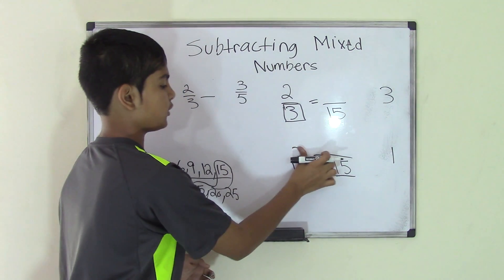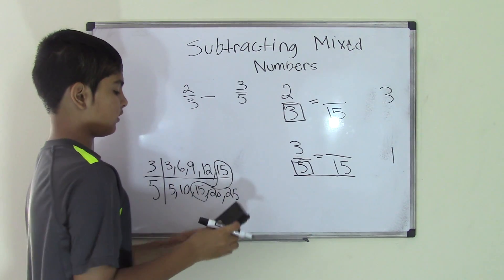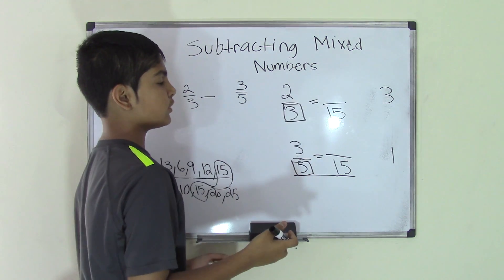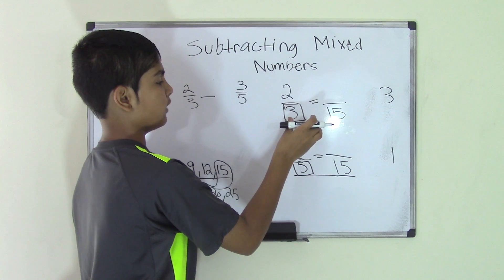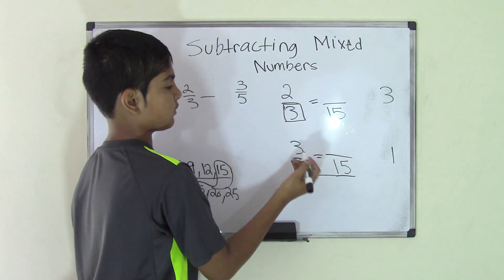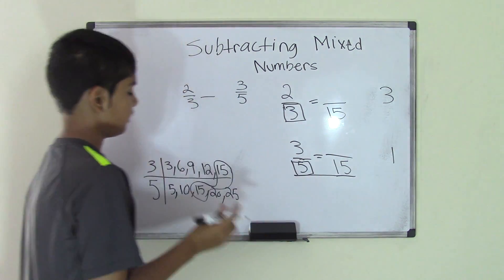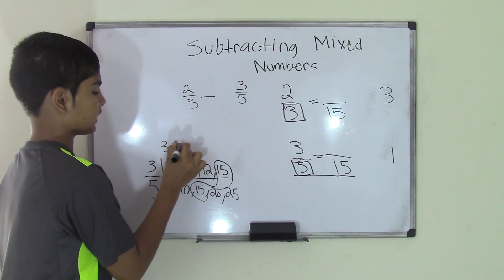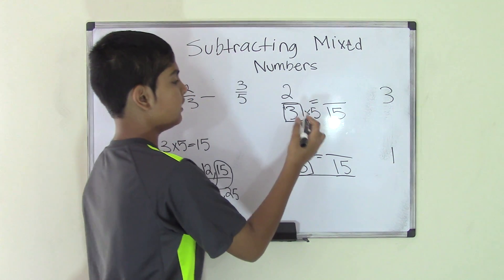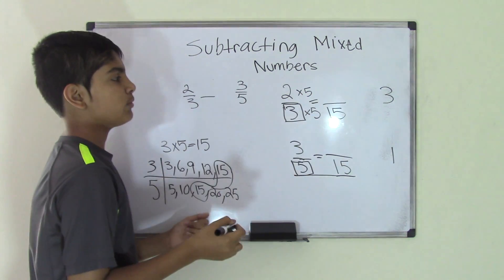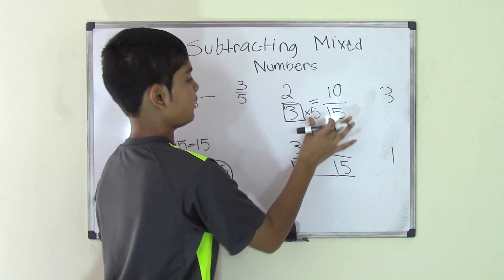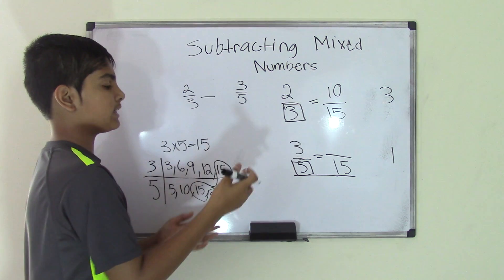So we take the least common multiple of 15 and come back to rename the fractions with 15 as the denominator for both fractions. Now to find the numerators — what times 3 equals 15? We know that 3 times 5 is 15, so since we multiplied the denominator by 5, we will also do 2 times 5 for the numerator. So 2 times 5 is 10, and our new numerator for 2/3 will be 10.